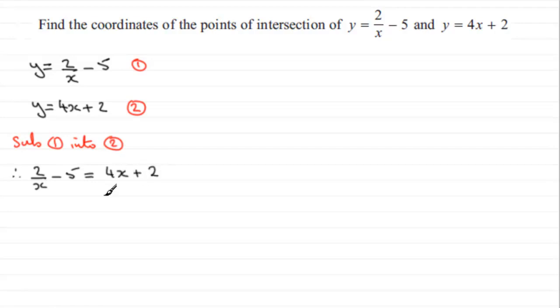And immediately I see that we've got a fraction here. So it's a good idea to get rid of that fraction. So I need to multiply throughout by x. And we've got four terms here. So if I multiply the first term by x, all that I get is 2. Then for the next term, it's going to be minus 5x. And then for this term, it will be 4x squared. And then for this term, plus 2x.